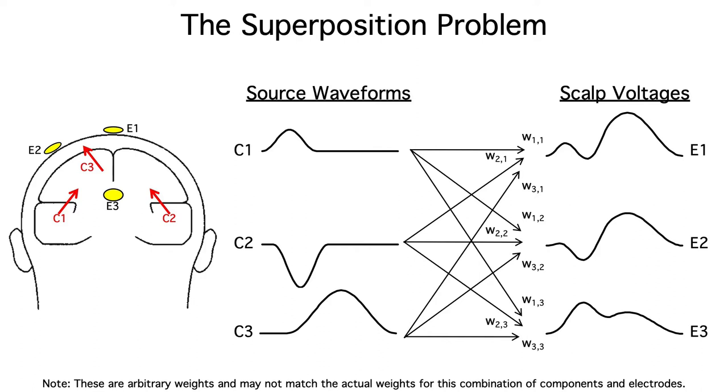This superposition of multiple ERP components at each electrode site creates real challenges for ERP researchers. In fact, I call it the superposition problem. We want to know how each individual component varies across experimental conditions or across groups of subjects, but the components are mixed together in our scalp recordings.